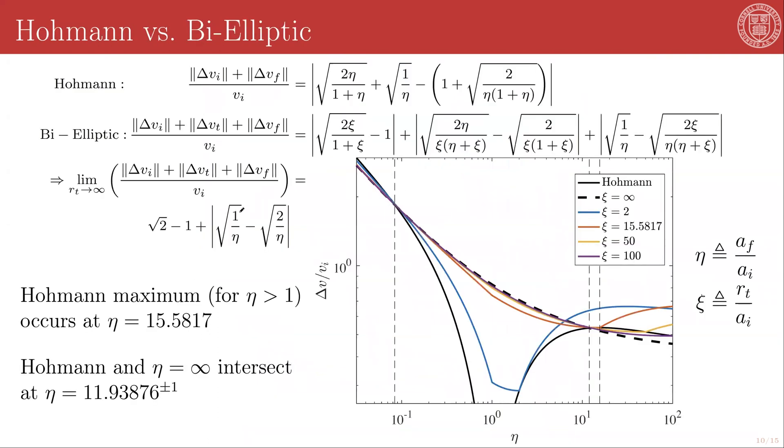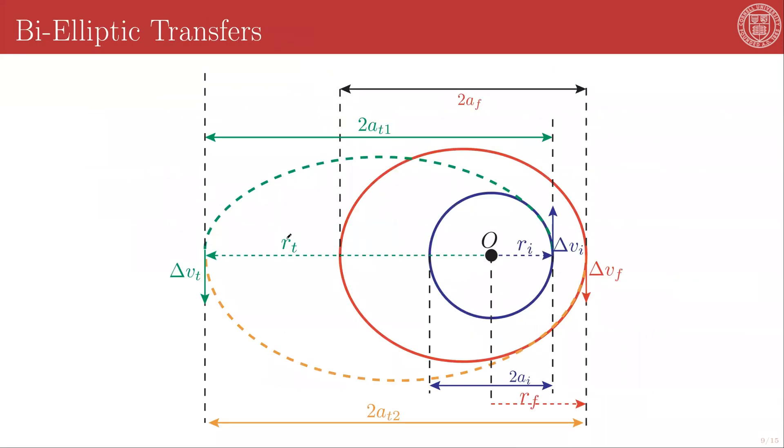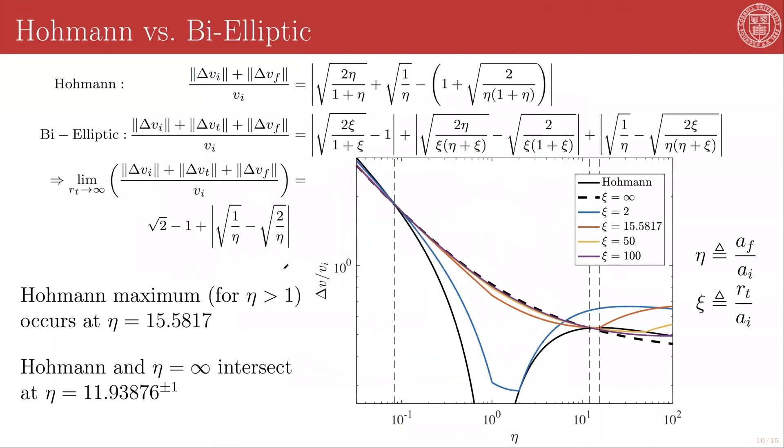Well, to analyze this, we can define two new parameters. There's eta, which is the ratio of the final orbit semi-major axis to the initial orbit semi-major axis, and xi, which is the ratio of the radius of your transfer ellipse to the initial semi-major axis. Our r_t here is that radius from the central body to that empty point in space where you perform your second burn in the bi-elliptic transfer. And then we can write the ratio of our net delta v scaled by the initial orbital velocity in the case of the Hohmann transfer just as a function of eta, and in the bi-elliptic case as a function of xi and eta. And you get these rather horrible looking expressions.